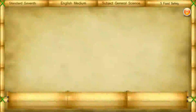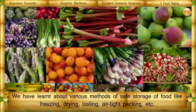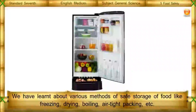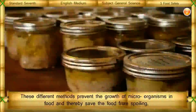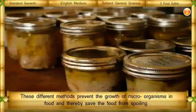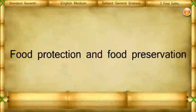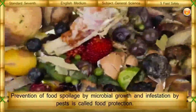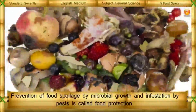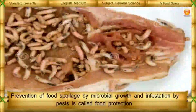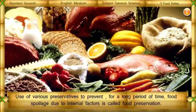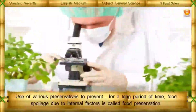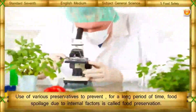Poor storage and preservation: We have learnt about various methods of safe storage of food like freezing, drying, boiling, and airtight packing. These different methods prevent the growth of microorganisms in food and thereby save the food from spoiling. Food protection refers to the prevention of food spoilage by microbial growth and infestation by pests. Food preservation refers to the use of various preservatives to prevent spoilage due to internal factors for a long period of time.